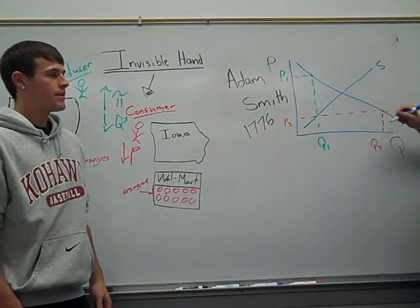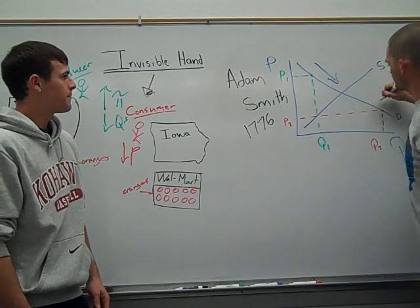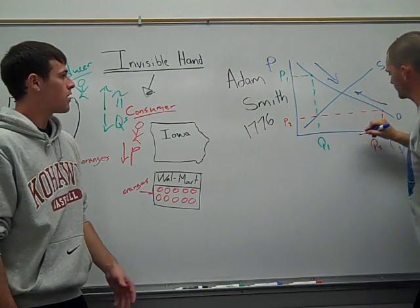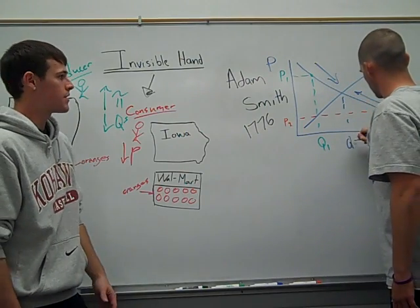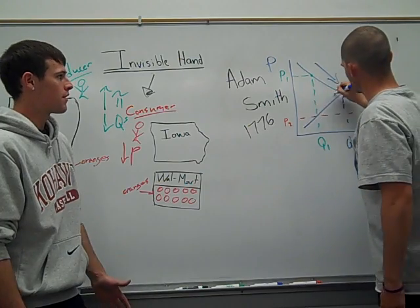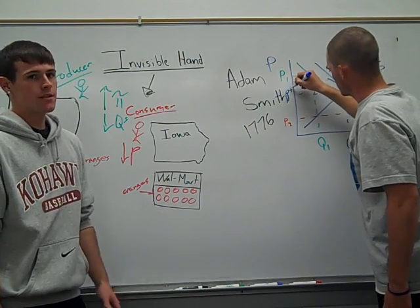In unfettered markets like we have in the U.S. today, consumers and producers allocate their resources in the most efficient manner, which gives us equilibrium.